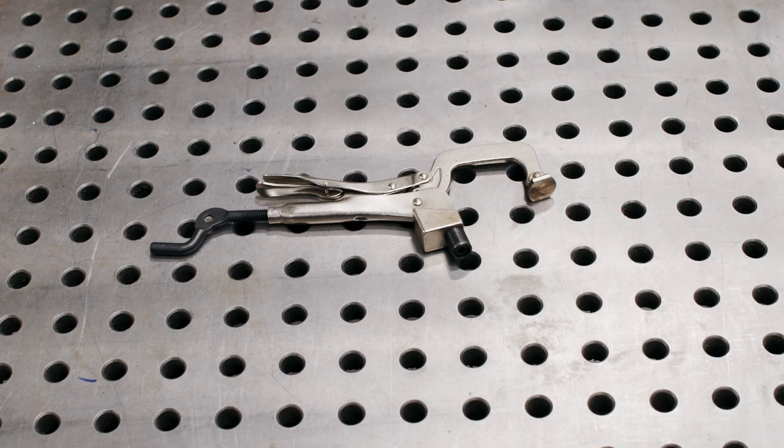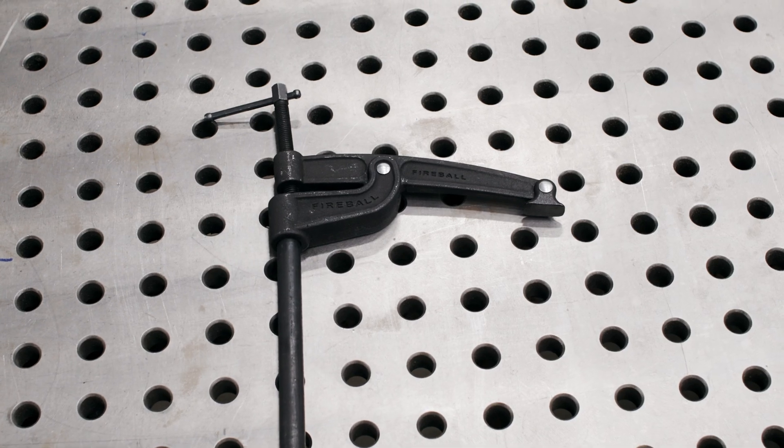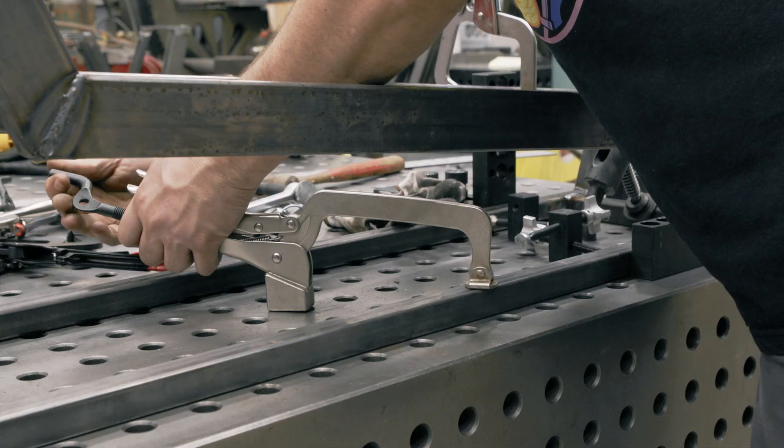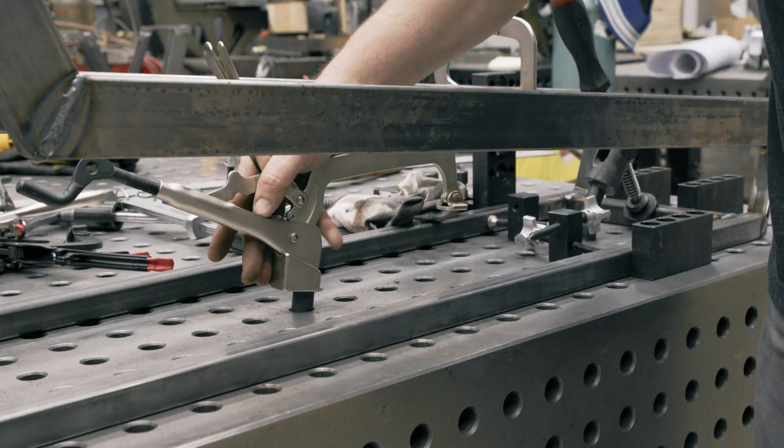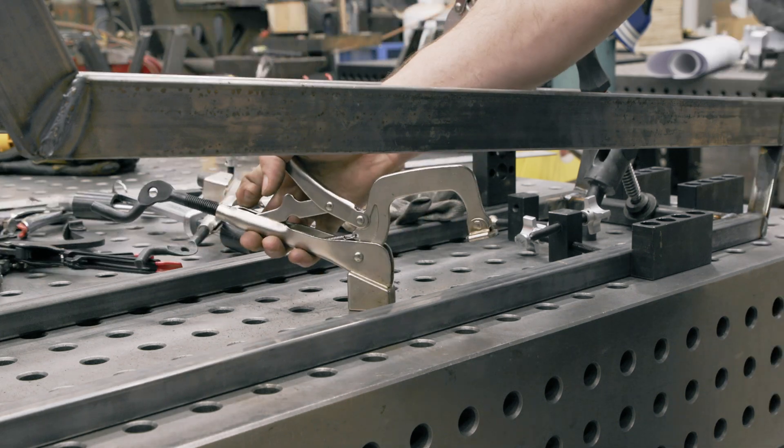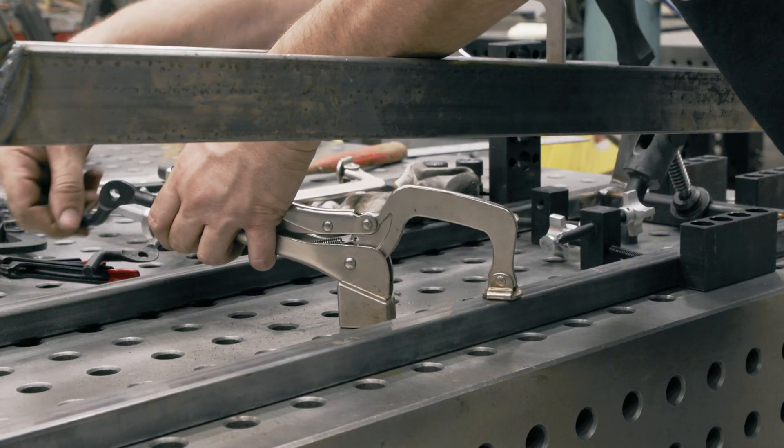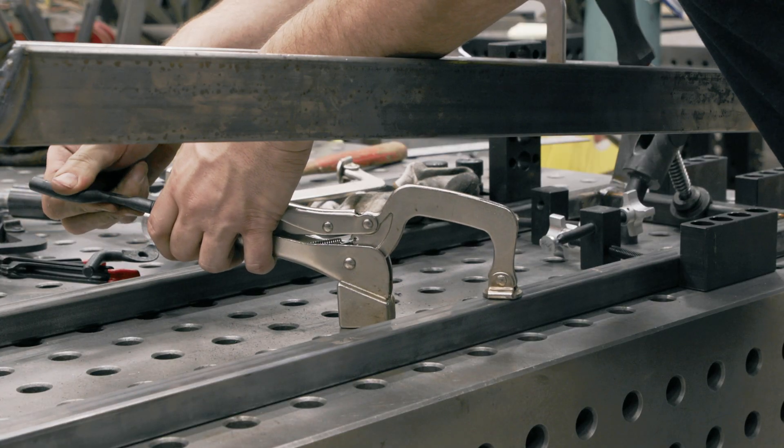So I have a couple options of clamps to use. One of the first clamps you can use is one of these quick change long reach clamps. They come in two different sizes, a long and a short. These are great because they're quick release and then you can reset them quickly.